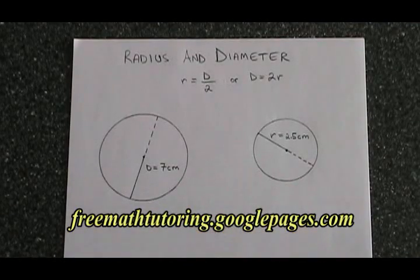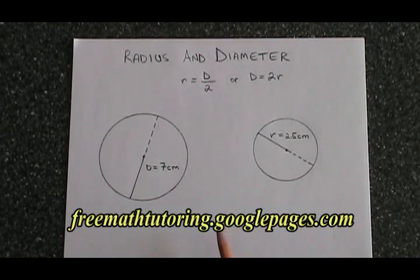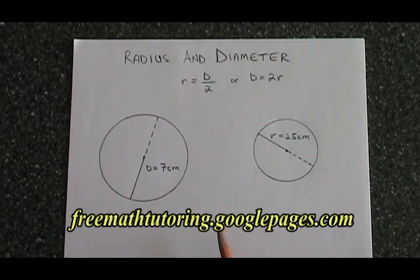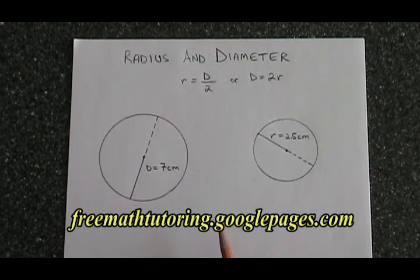For many problems that involve a circle, like when we're calculating the area or the circumference of a circle, we need to know the radius.